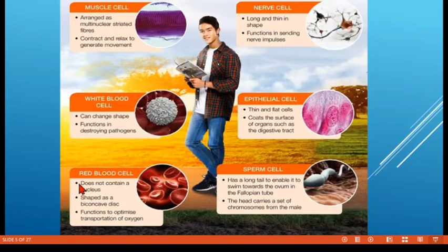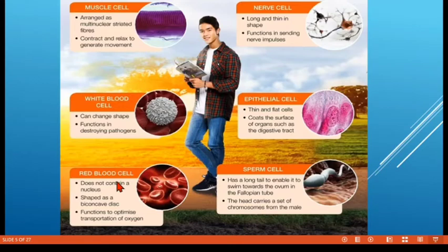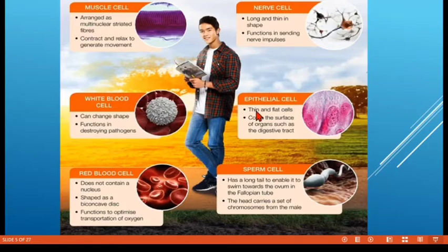Red blood cells do not contain a nucleus; their shape is biconcave. They do not contain a nucleus so that more hemoglobin can be present to transport oxygen. Nerve cells are long and thin; their function is to send nerve impulses. Epithelial cells have a thin flat structure; their function is to coat the surface of organs such as the digestive tract. Sperm cells have a long tail to enable them to swim towards the ovum in the fallopian tube for fertilization.